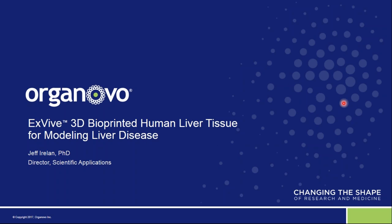Our second speaker will be Dr. Alice Chin. She received her Ph.D. in biology with an emphasis in developmental biology from Johns Hopkins University in association with Carnegie Institute of Washington Department of Embryology, and has completed a post-doctoral fellowship at the Harvard Stem Cell Institute. Alice joined Organovo to lead the development of in vitro human tissue models in liver and kidney for toxicology research and disease modeling. And with that, I'd like to turn it over to Jeff.